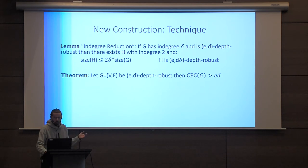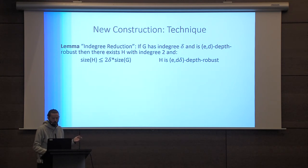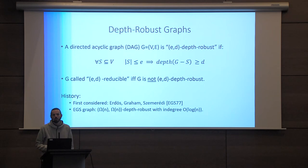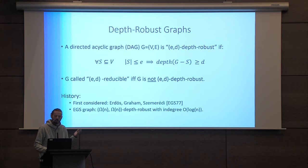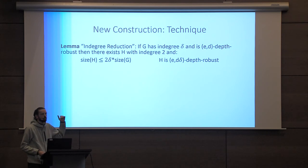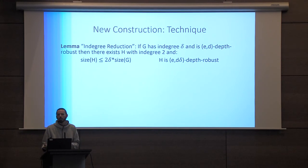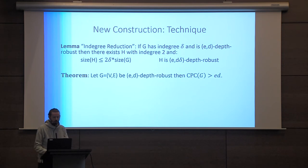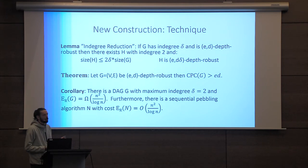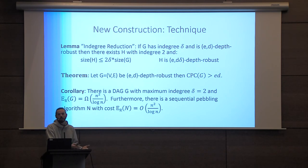Given this theorem, all we need to do is find a graph with high depth robustness. Erdős, Graham, and Szemerédi already gave us such a construction — using quite an old result. The only problem with that construction is it didn't have constant in-degree. So the other thing we do is show how to reduce the in-degree of a graph without paying too much in depth robustness. Combining those two results — this lemma and this theorem — we end up with an asymptotically optimal construction for a graph with high CPC and therefore an iMHF.